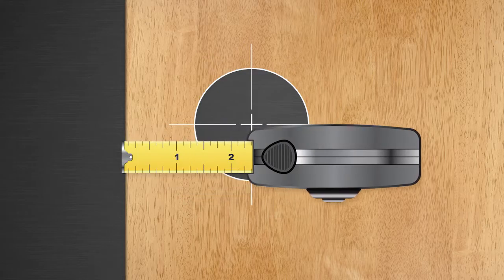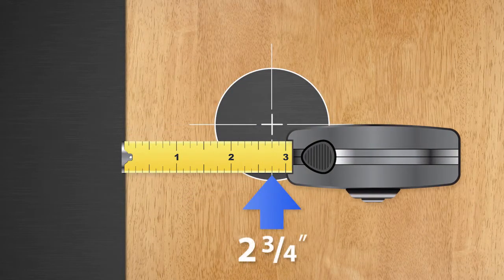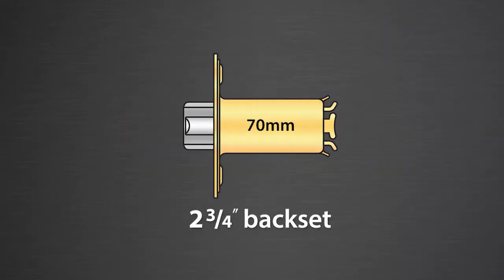If the distance is 2 3/8 of an inch, use the latch marked 60mm. On doors that have 2 3/4 inch backsets, select the 70mm latch.